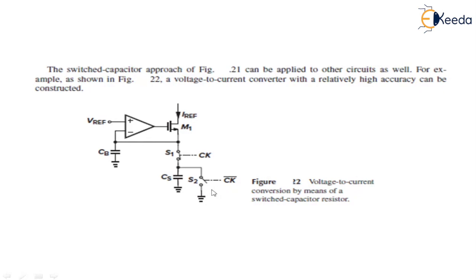Thank you. This is all about constant GM biasing. This is under bandgap reference voltage under the heading Analog Building Block. Join me in the next video of the next unit.